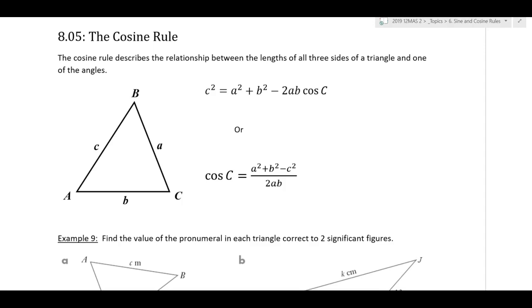Whereas the sine rule uses two pairs of sides and angles, the cosine rule uses all three sides and just one angle. The most typical way to express the cosine rule is in this form here, which will appear on your formula sheet. But we could rearrange that in this form here, which we'll use in the next exercise, actually.